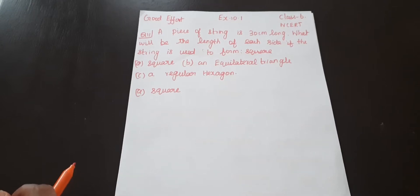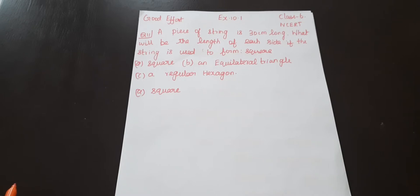Welcome to Good Effort Channel. Good morning students. In Exercise 10.1, question number 11: A piece of string is 30 cm long. What will be the length of each side if the string is used to form a square, an equilateral triangle, and a regular hexagon?